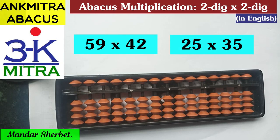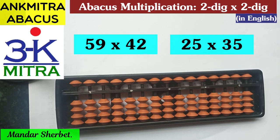Hello everyone. In this video I'll be demonstrating two different multiplication sums. Both involve multiplication of two two-digit numbers. The first sum is 59 multiplied by 42 and the second sum is 25 multiplied by 35. Both have been requested by two different subscribers, so I'm demonstrating both of them. Please have a careful look and then do try it out on your abacus as well.